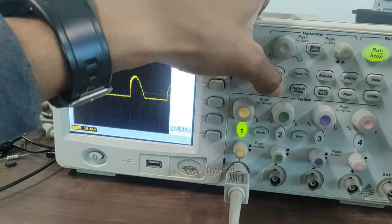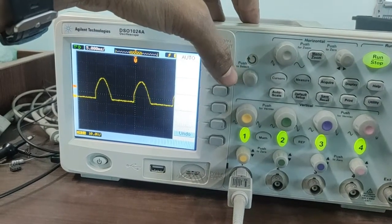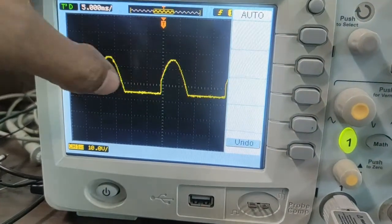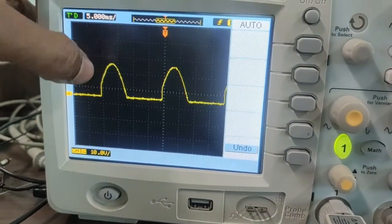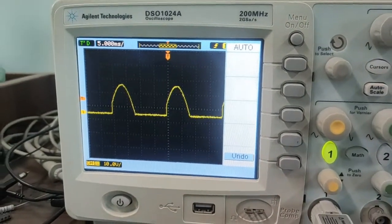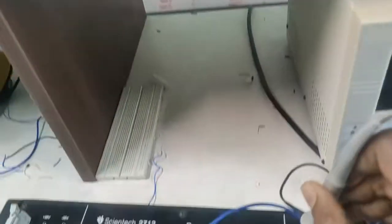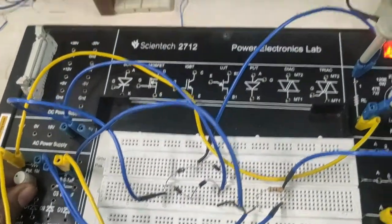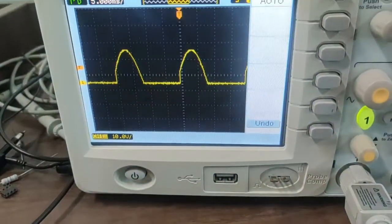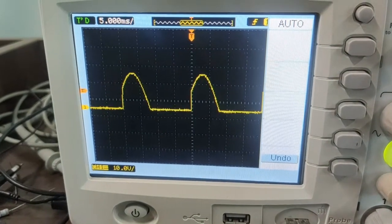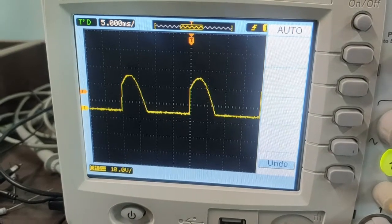Now, auto scale it. This is our output. This output can be changed, the firing angle can be changed by varying the potentiometer. See here, I am varying this resistance of this potentiometer and see, firing angle is changing accordingly. See here.